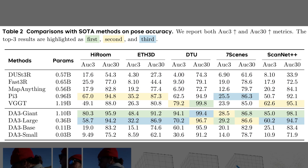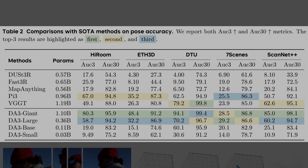Table 2 compares pose accuracy across several datasets using two metrics. AUC 3 measures how well camera angles are recovered under a strict 3-degree tolerance. AUC 30 is a looser score with a 30-degree tolerance, so it reflects broader robustness. Across datasets, the DA3 family consistently ranks in the top positions, which signals strong cross-view reasoning without extra task heads.